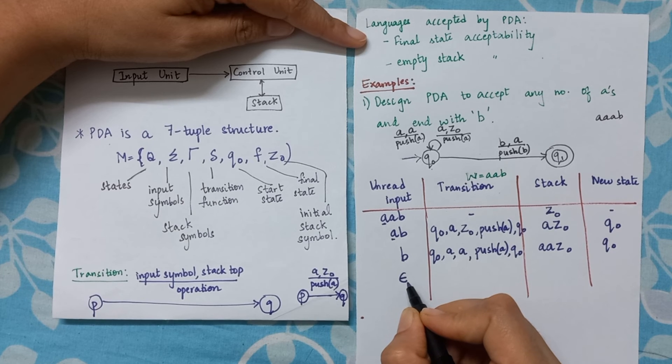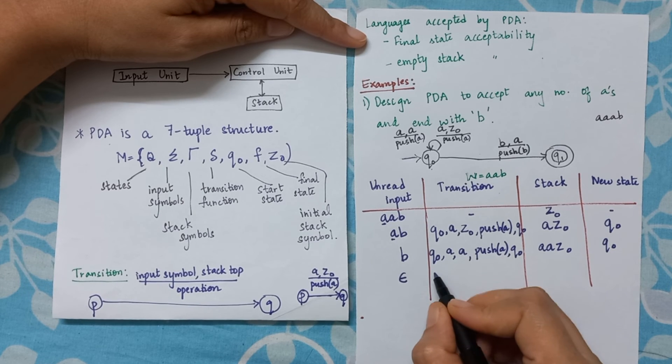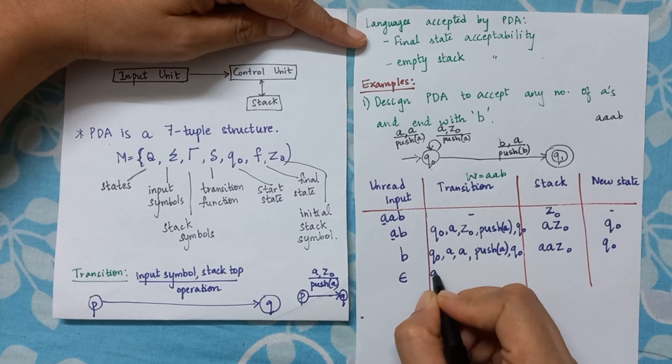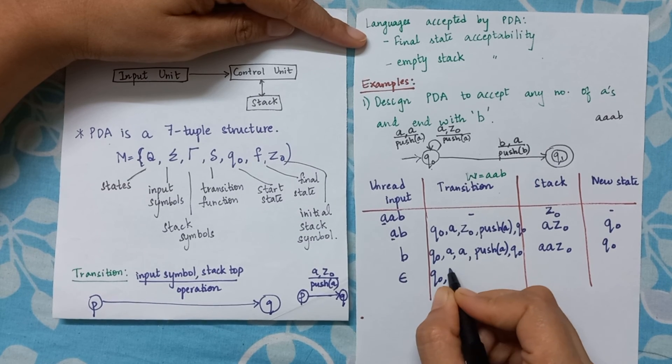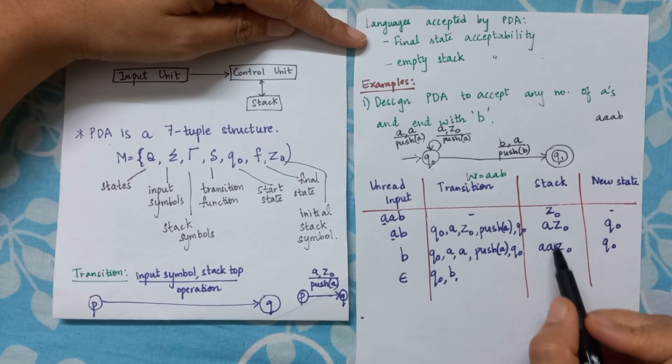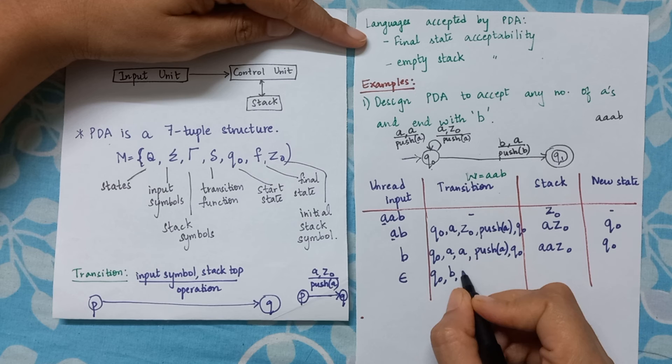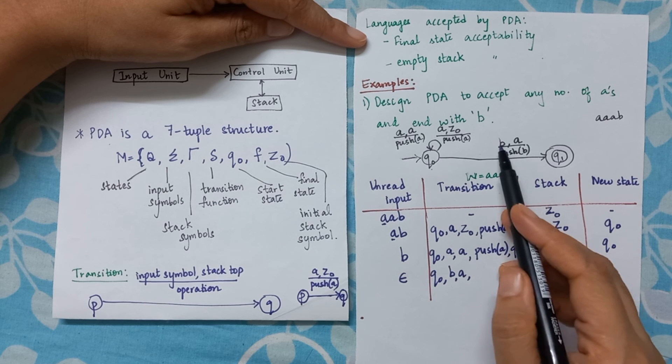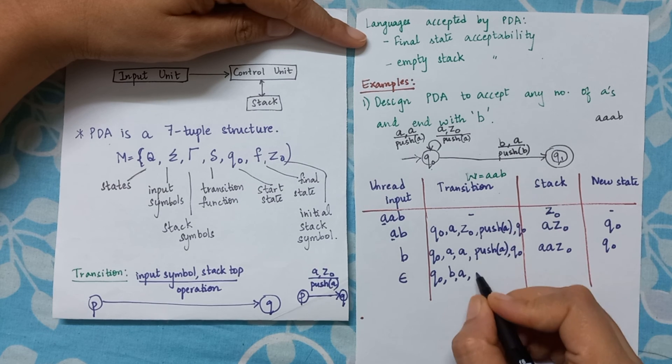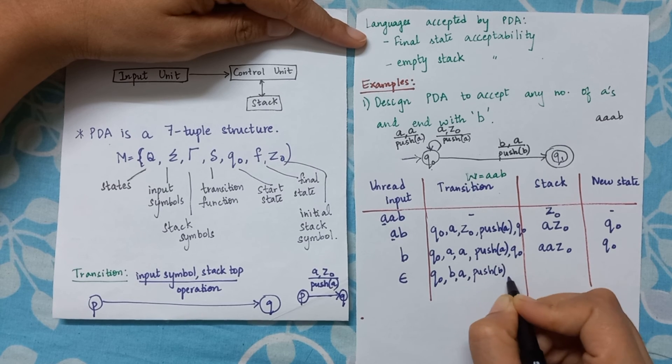Now I am reading 'b', so here only thing left is epsilon. I start with q0. What am I reading? 'b'. What will be at the stack top? 'a'. If so is the situation, I push 'b' onto the stack.